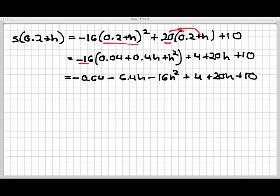Now let's collect like terms here. Let's single underline the constant terms. Those terms add up to be 13.36, which is interesting, because that's what s of 0.2 was on the previous slide. Double underline those linear terms. Those two terms add up to 13.6h.